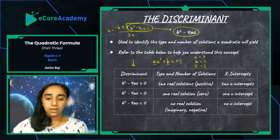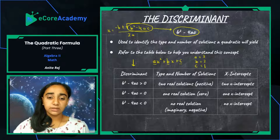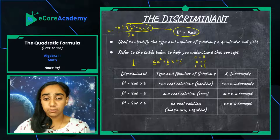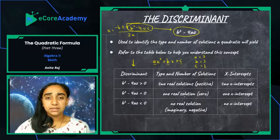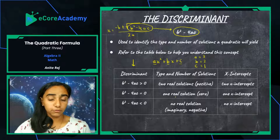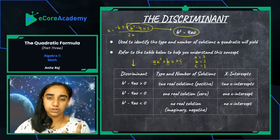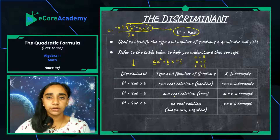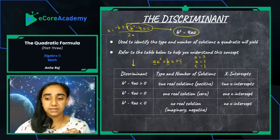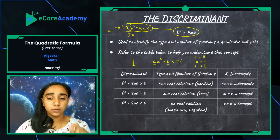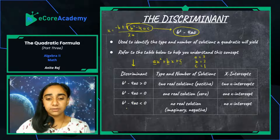Here's another scenario: if you calculate b squared minus 4ac and it is equal to zero, that means your quadratic has one real solution. That was the second scenario — where your vertex sits on the x-axis, your parabola only touches the x-axis in one place, it has only one x-intercept. This is the case when your discriminant equals zero.